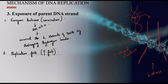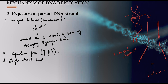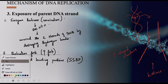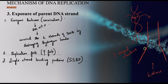Once the DNA is separated at the replication fork, the separated strands must be stabilized. This stabilization is done by single-strand binding proteins, also called SSBP, which bind to the exposed single strands to keep them stable for the replication process.